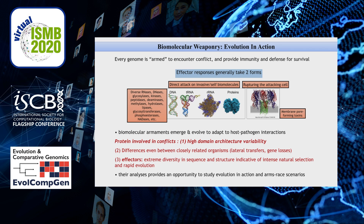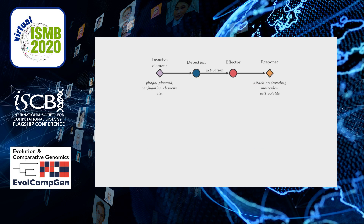Proteins involved in conflict generally display high domain architecture variability, with differences even among closely related organisms, and effectors in particular show extreme diversity in sequence and structure, indicative of them being under intense natural selection to adapt to host-pathogen interactions. Counter-invasive conflict systems have two main components: first are the sensors that detect the invasive element and activate the other primary component, the effectors, that generate a defense response.